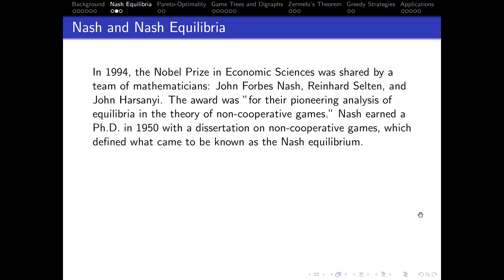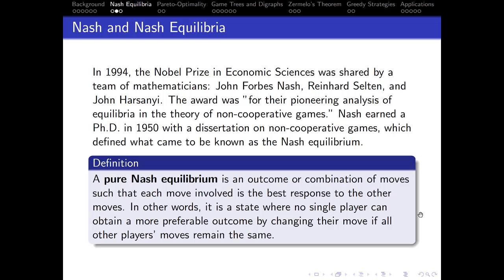In 1994, the Nobel Prize in Economic Sciences was shared by mathematicians John Forbes Nash, Reinhardt Selten, and John Harsanyi, for their pioneering analysis of equilibria in the theory of non-cooperative games. Nash earned a PhD in 1950 with a dissertation on non-cooperative games and defined what came to be known as the Nash Equilibrium. A pure Nash Equilibrium is an outcome or combination of moves such that each move is the best response to the other moves — a state where no single player can obtain a more preferable outcome by changing their move if all other players' moves remain the same.